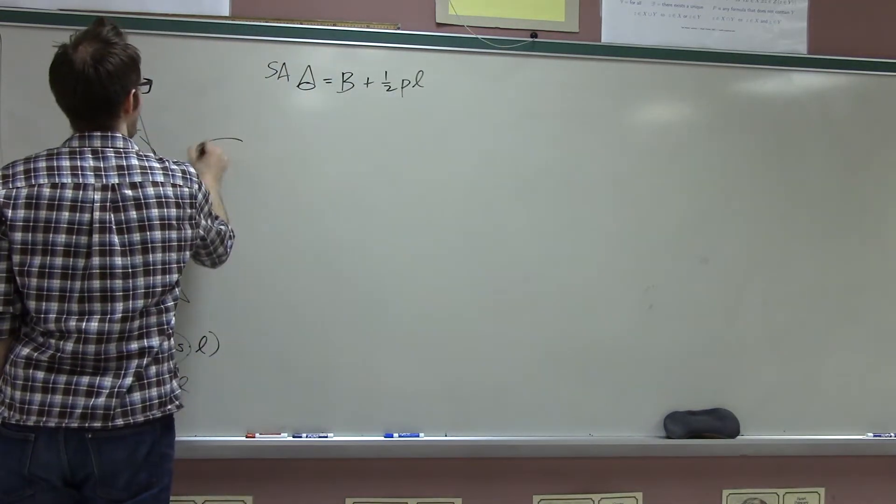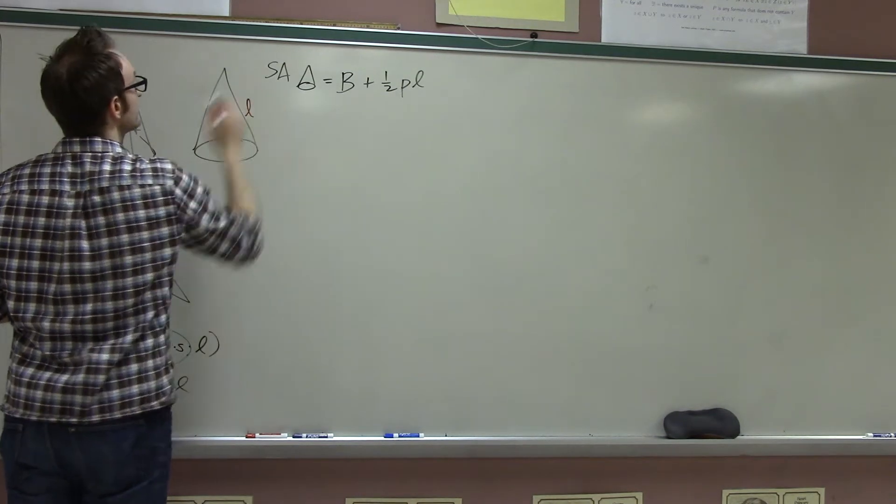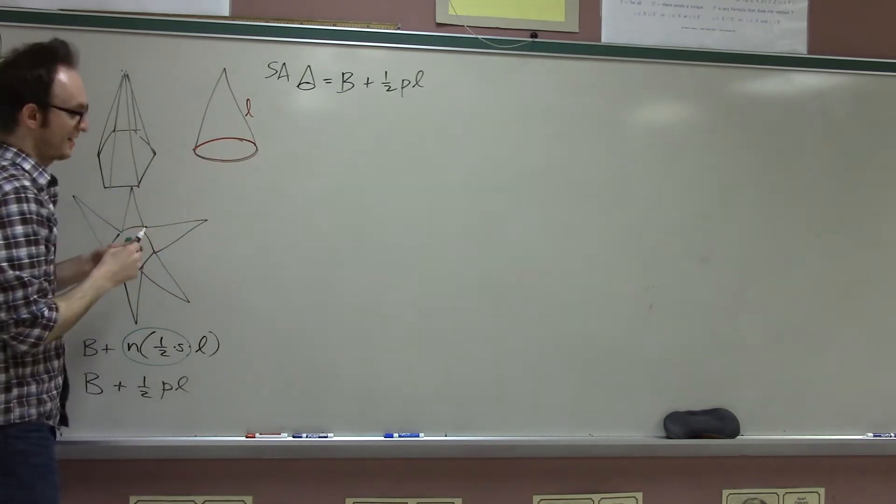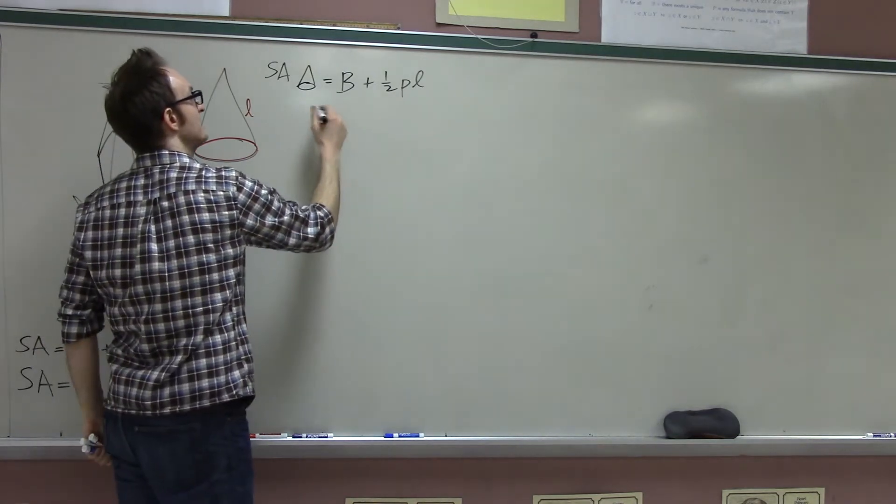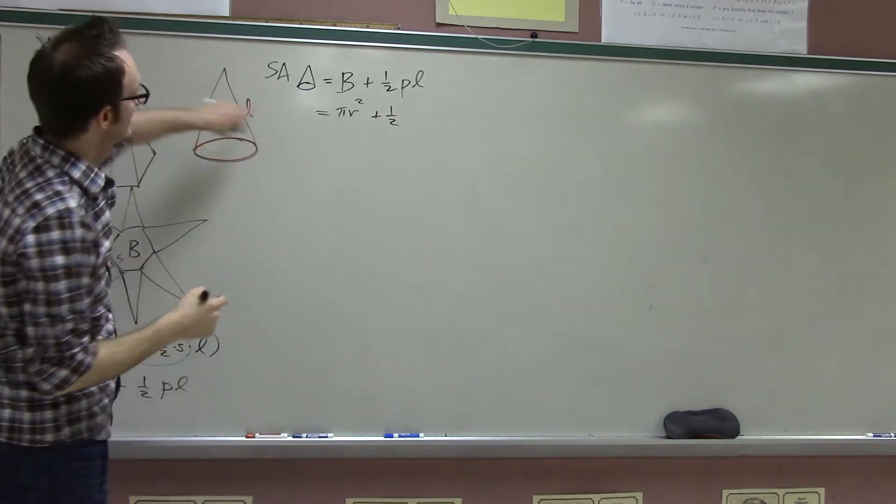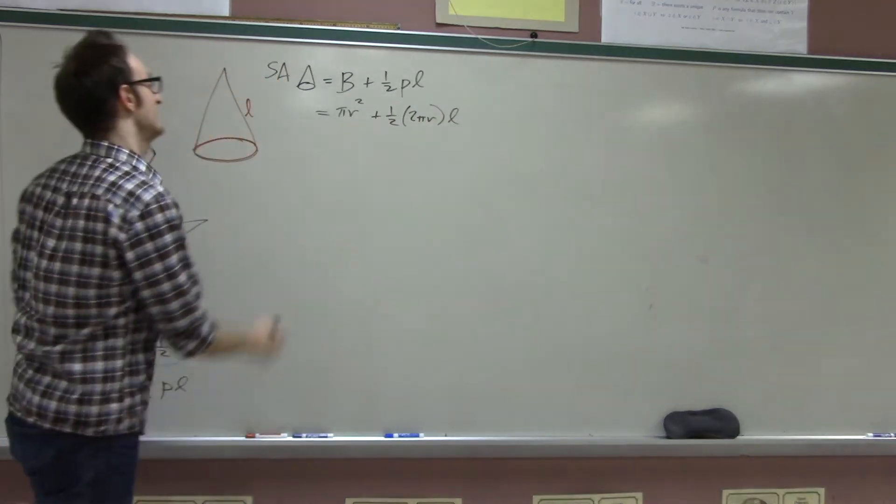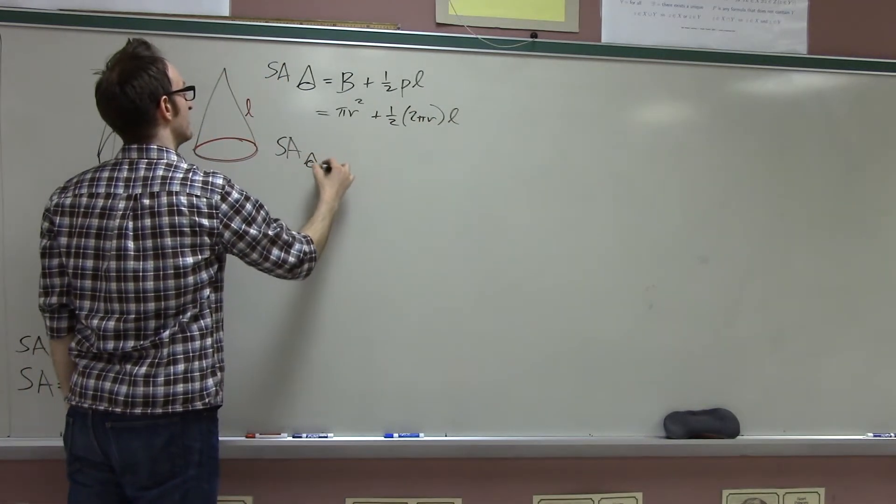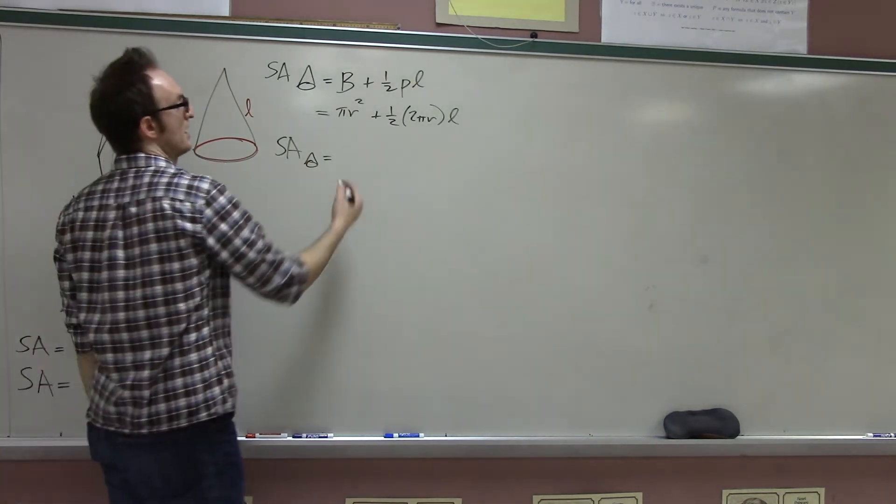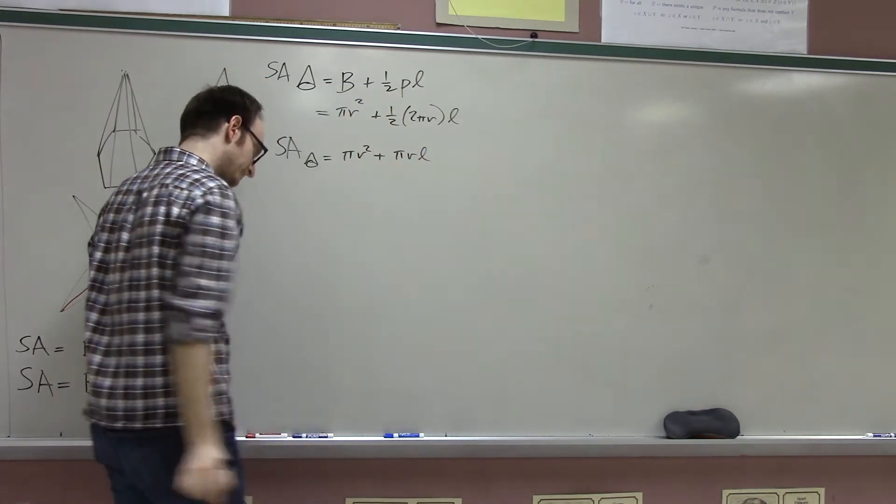But now, if I have a cone, well, the slant height of the cone is just going to be this guy. And what is the perimeter of the base? Well, that's just the circumference. So the base of the cone is just pi R squared. And this is one half times, well, what is the perimeter? That's just 2 pi R. And so there is this formula, which you see, which we got just by treating the cone like a pyramid, which is pi R squared plus pi RL.